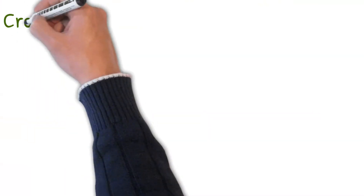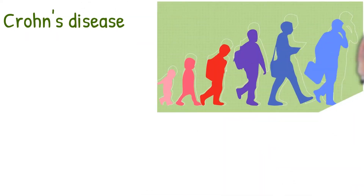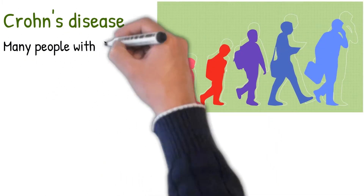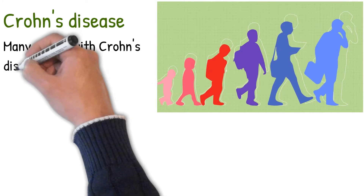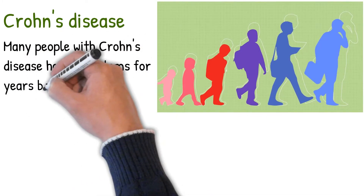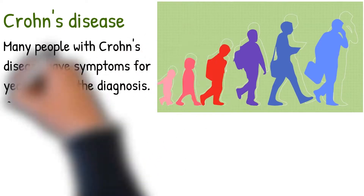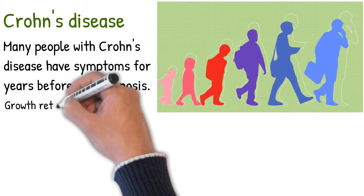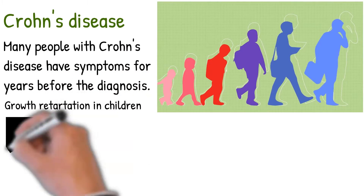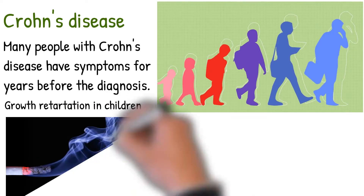Many people with Crohn's disease have symptoms for years before the diagnosis. Many children are first diagnosed because of inability to maintain growth. Most commonly it occurs in teenagers, but may occur at any age. Crohn's disease is more common in whites than blacks, and in Jews than non-Jews.